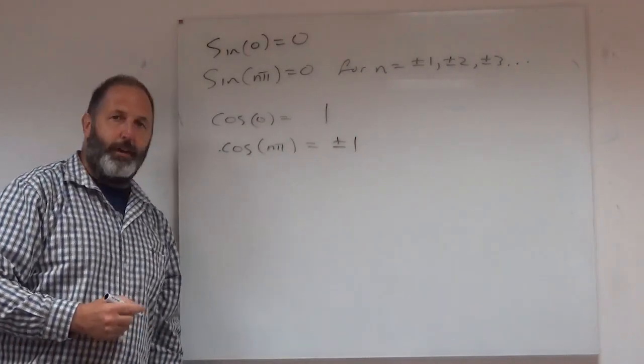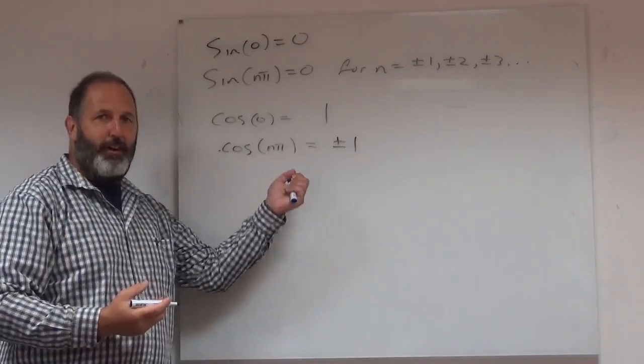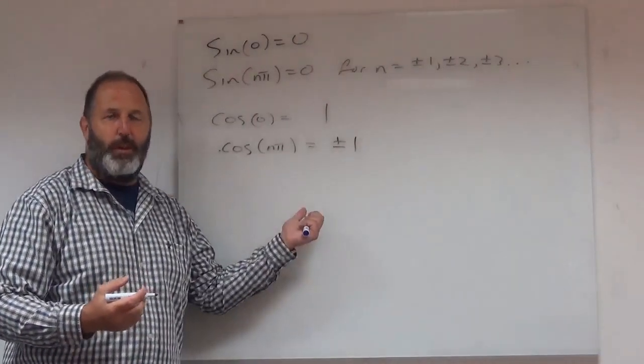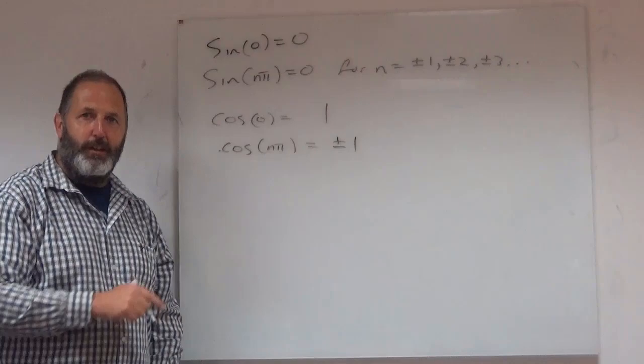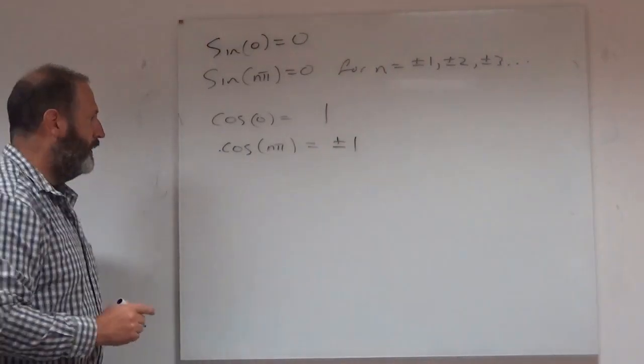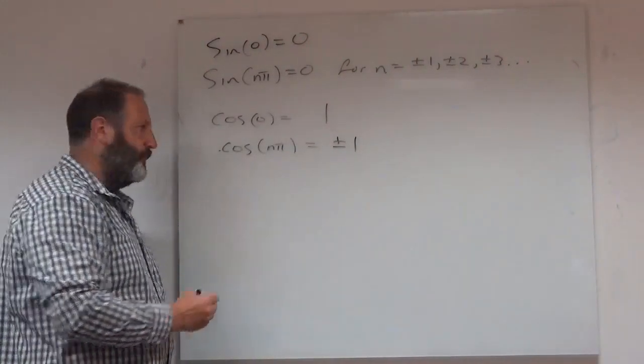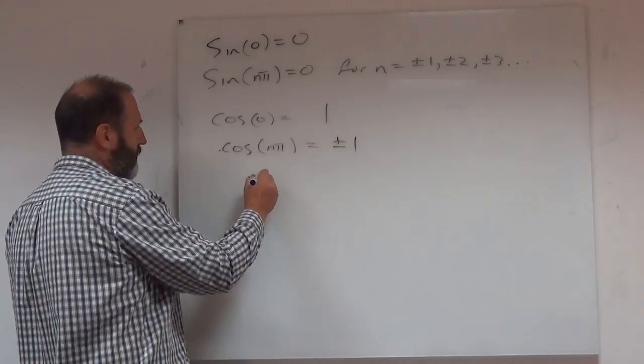Then cosine of nπ can only ever be plus or minus 1, and this is vital. You'll see this week in, week out. So you have to make sense of this. So picture the sketch. We might want to delve into this a bit more. What we could do then is we could say, well...